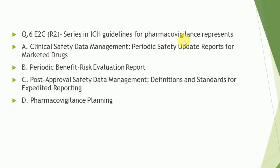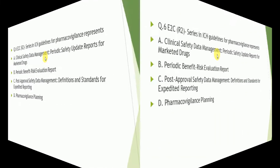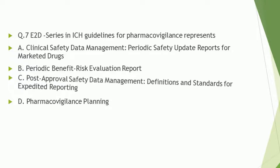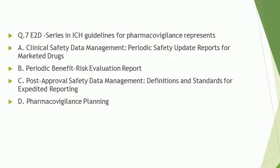for pharmacovigilance represent? The correct answer is: periodic benefit-risk evaluation report. Question number 7: what does the E2D series in ICH guideline for pharmacovigilance represent? The correct answer is: pharmacovigilance data management — its definition and standard for expedited reporting.